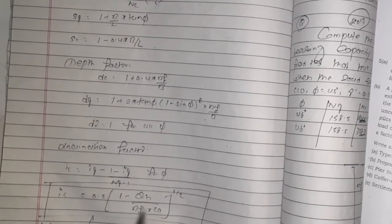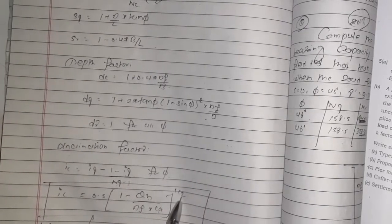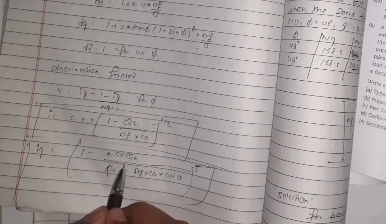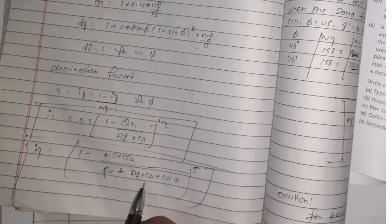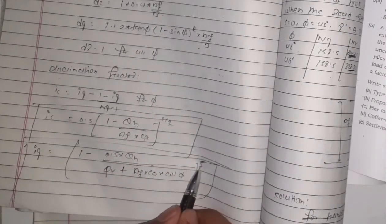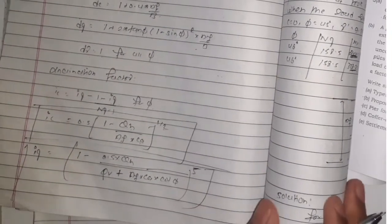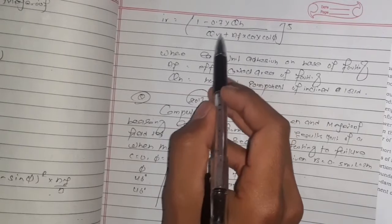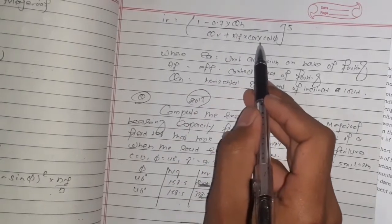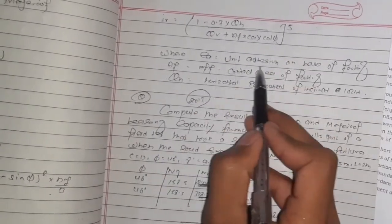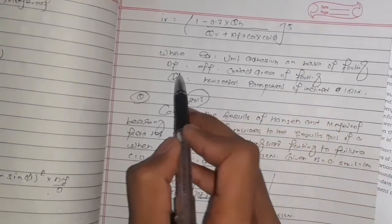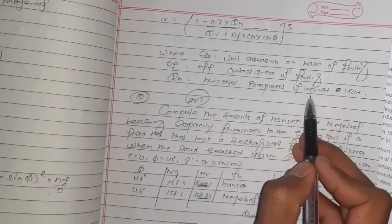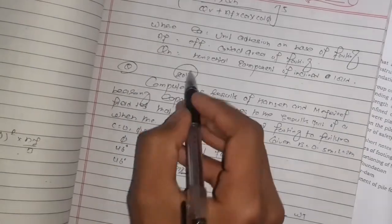ic = 0.5·(1 - qh)·(af·ca)^(1/2), iq = (1 - 0.5·qh/(qv + af·ca·cotφ))^φ. For φ, iγ = (1 - 0.7·qh/(qv + af·ca·cotφ))^φ. Where ca is unit cohesion on base of footing, af is effective contact area of footing, and qh is horizontal component of inclined load.